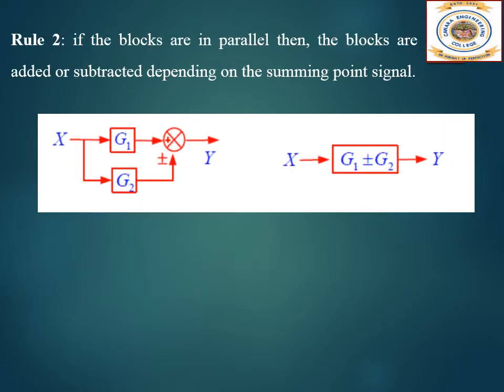Rule 2: if blocks are in parallel, they have to be added or subtracted depending on the summing point signal. G1 has a positive sign, G2 has plus or minus. So the result is G1 ± G2, depending on the signs at the summing point.